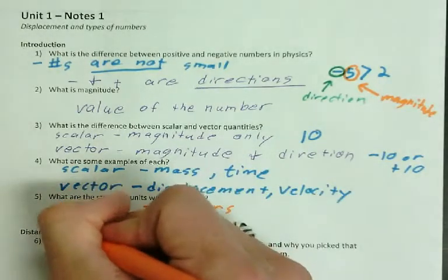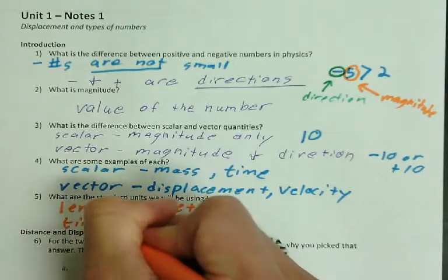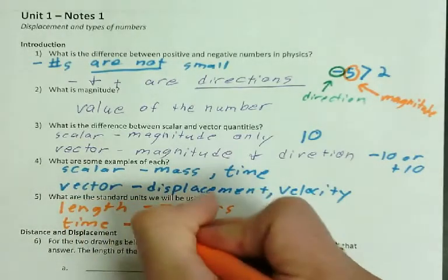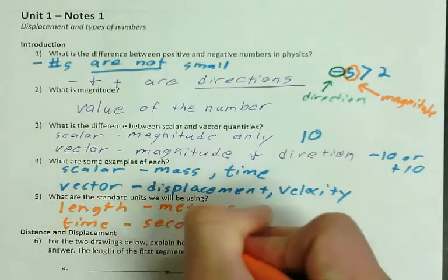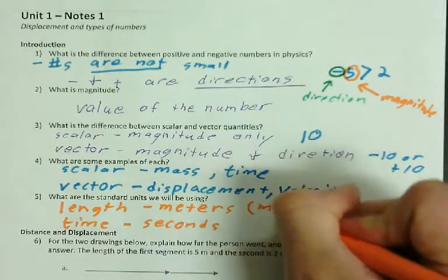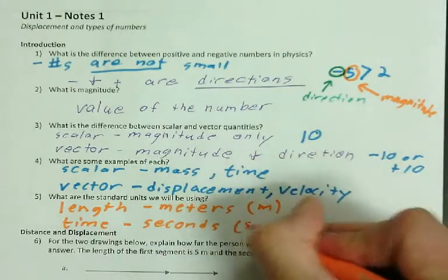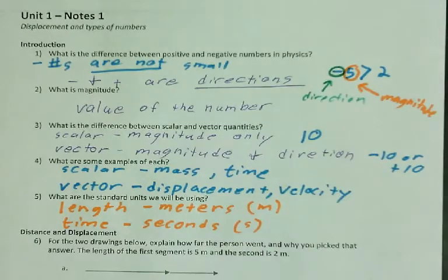And anything we do with a time is going to be seconds. And in case it's not obvious, meters is M and seconds is S. We've done those, but just to be clear.